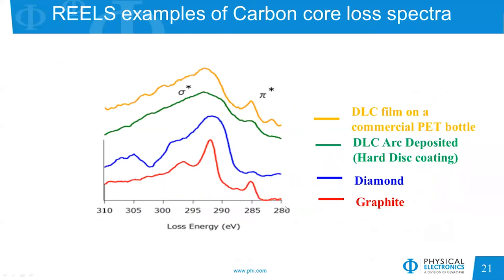Looking out about 300 electron volts from the backscatter peak, you can also see carbon loss spectra. The four different materials analyzed — DLC on the inside of a polyethylene terephthalate bottle, DLC on a computer hard disk coating, diamond, and graphite — show dramatically different spectra, so you can characterize your materials very easily using REELS.